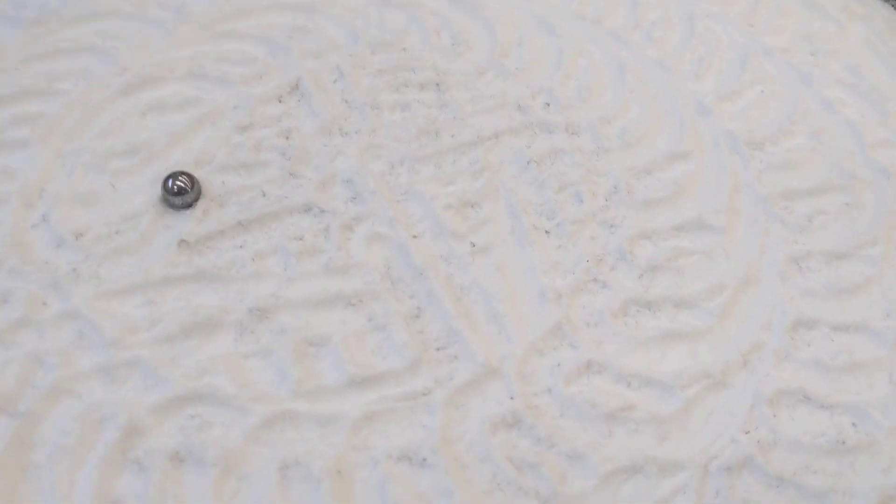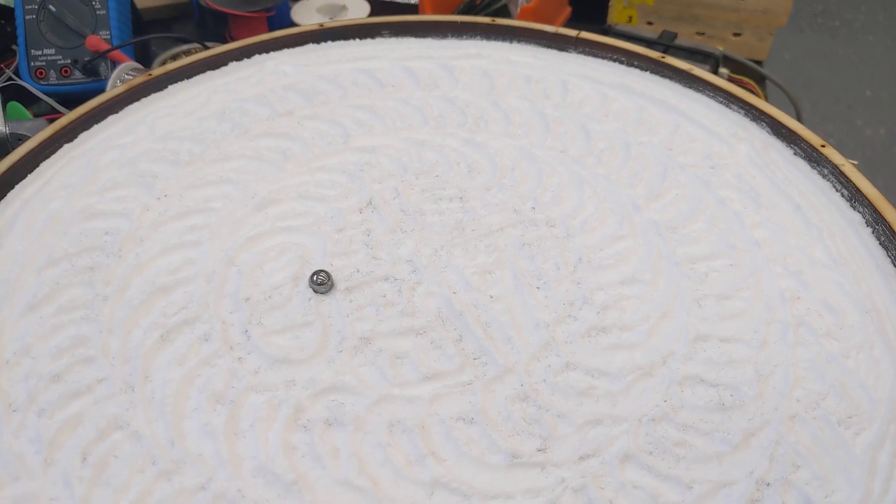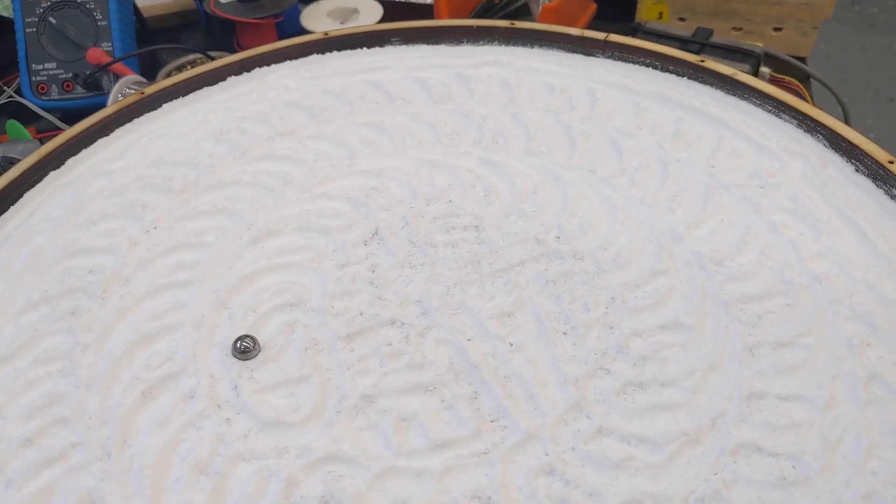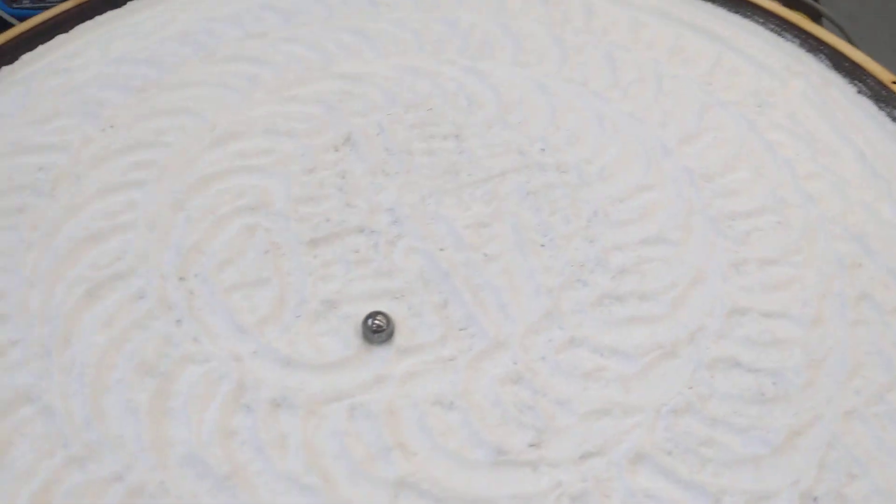But you might be able to see that the felt is all scundulated and poking up through the sand. It's worse where the ball has been rolling around a lot.